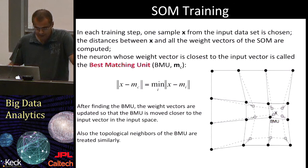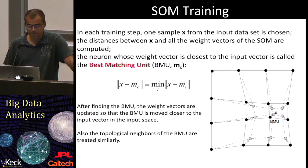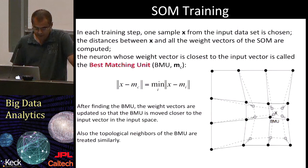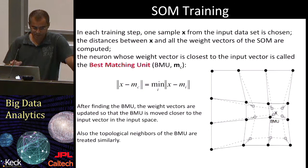Now let's briefly see how the training is done. It resembles vector quantization algorithms like k-means. In each training step, one sample X from the input dataset is chosen. Then the distances between X and all other units are computed. The neuron closest to the input vector is called the best matching unit, or BMU. After finding the best matching unit, the weight vectors are updated so that the BMU is moved closer to the input in the vector space. As shown in this figure, the BMU and also its topological neighbors are all moved towards the sample vector X.